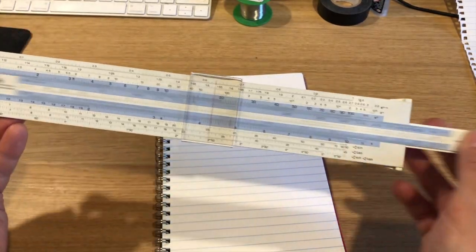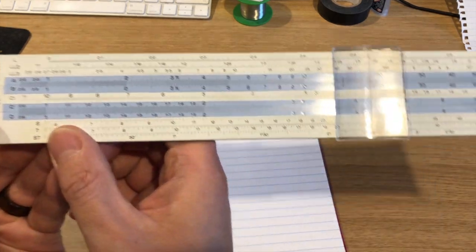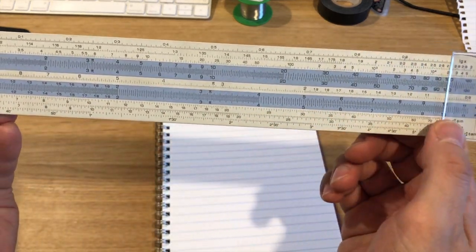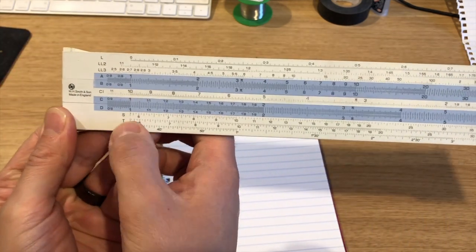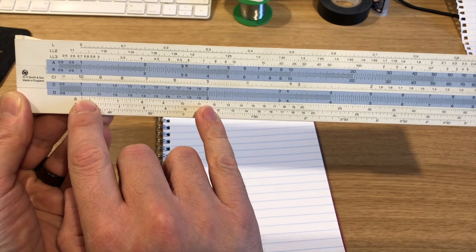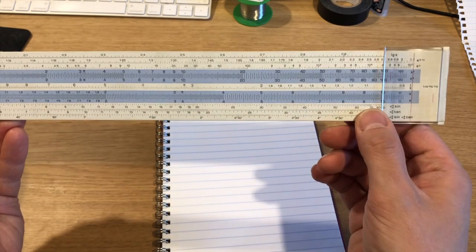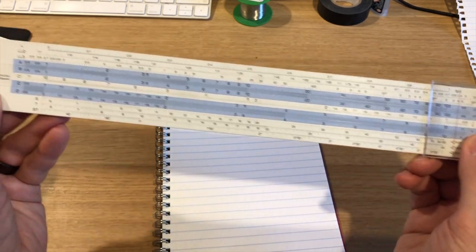So slide rule, and as you would expect, part of it slides. What you've got on this, if you look closely, is a set of scales, and they're logarithmic scales. So the interval between 1 and 2 is larger than the interval between 2 and 3, 3 and 4, 4 and 5, and so on, all the way through to 10. That's logarithmic scale.